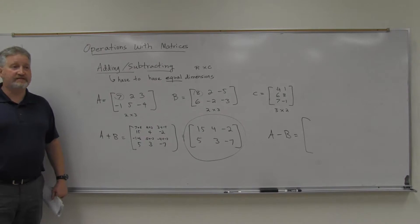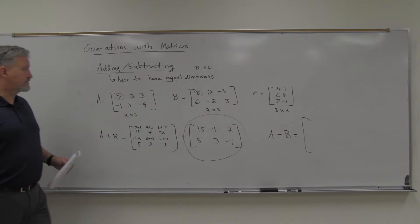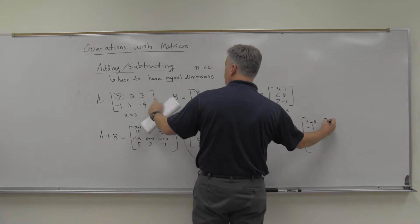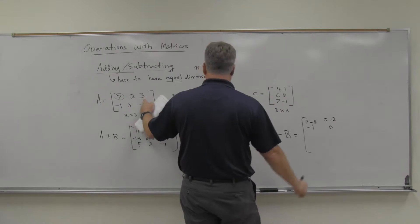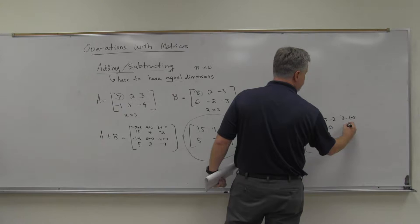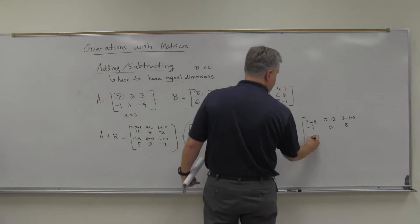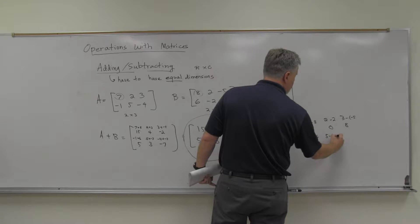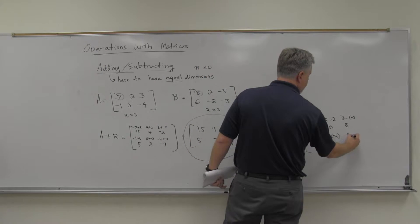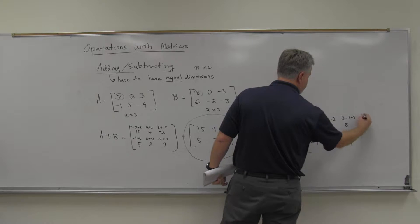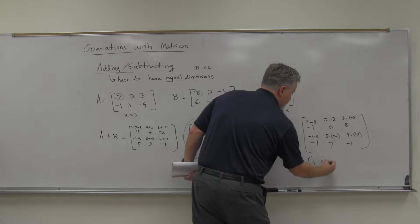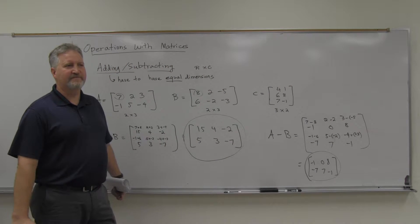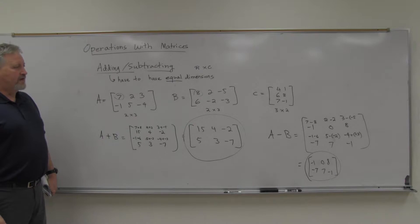What about subtraction? Same thing, except you subtract entry by entry. So A minus B: 7 minus 8 is negative 1, 2 minus 2 is 0, 3 minus negative 5 is 8. Then negative 1 minus 6 is negative 7, 5 minus negative 2 is 7, negative 4 minus negative 3 is negative 1. So A minus B gives negative 1, 0, 8, negative 7, 7, negative 1.